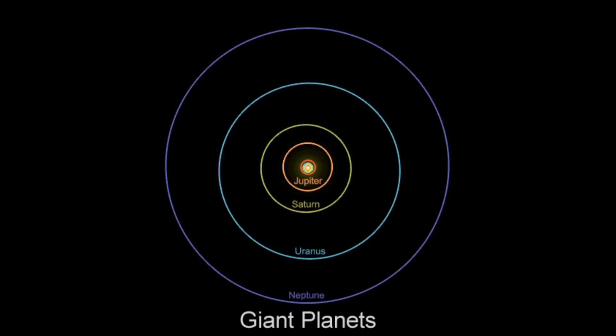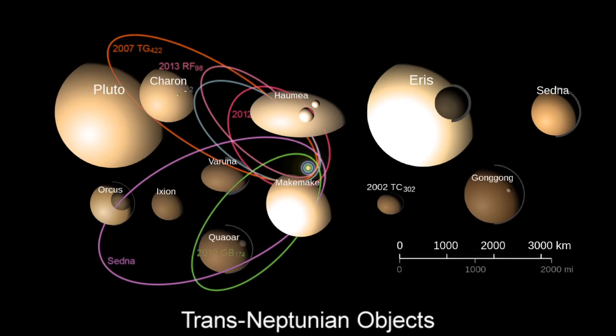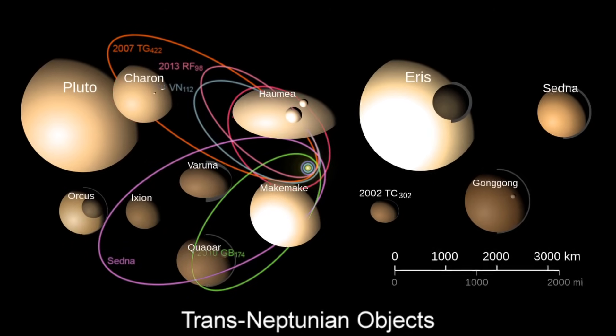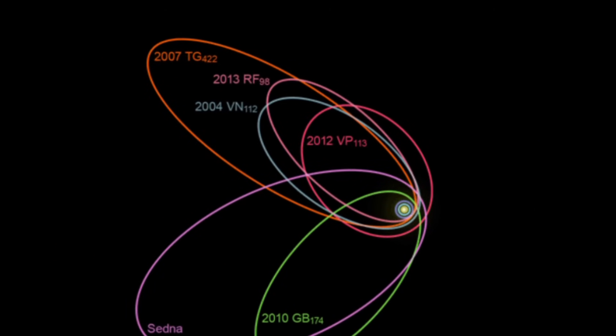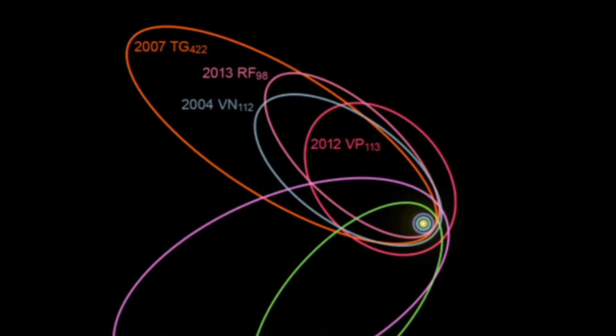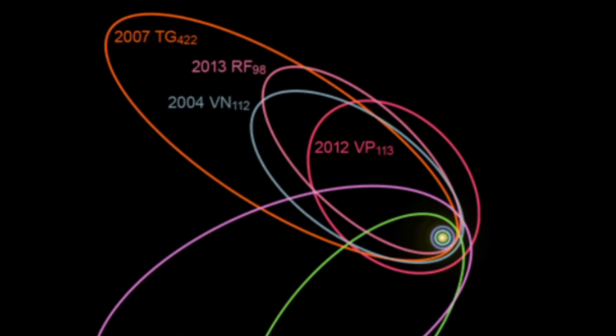Now, when we move beyond Neptune, we encounter smaller and irregularly shaped worlds known as trans-Neptunian objects, or TNOs. Unlike the inner planets, the orbits of many of these objects are highly elongated and stretch far away from the Sun.